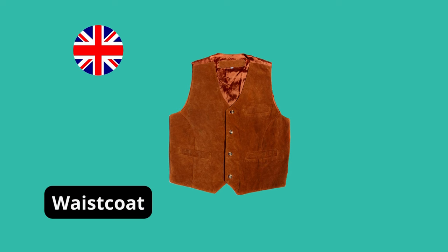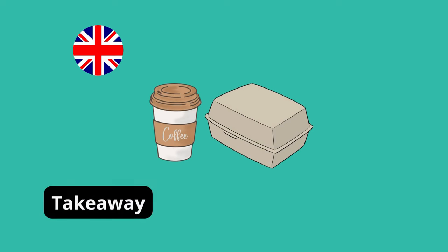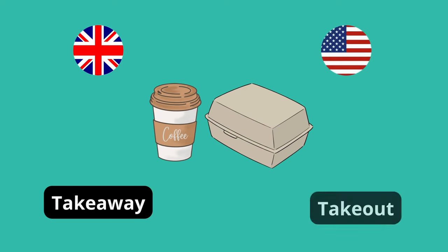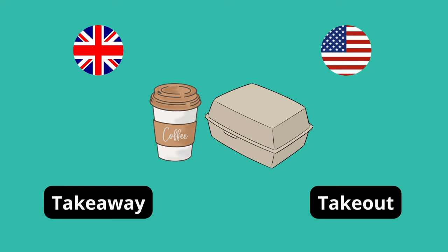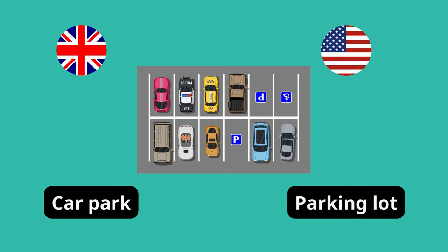Waistcoat (British English) — Vest (American English). Takeaway (British English) — Takeout (American English). Car park (British English) — Parking lot (American English).